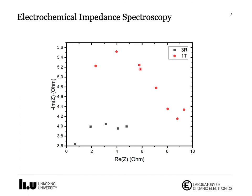Then we have the impedance measurement. The lower resistance for the 3R compared to 1T means higher electrical conductivity.